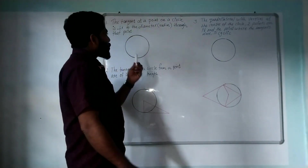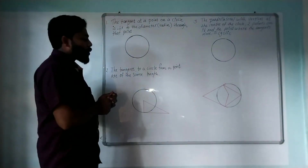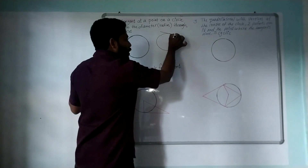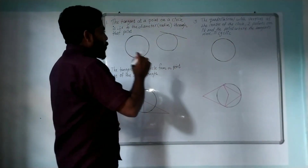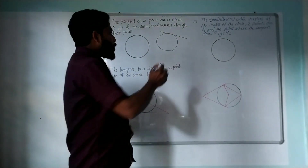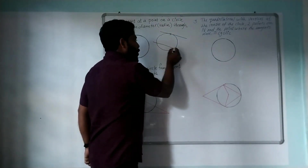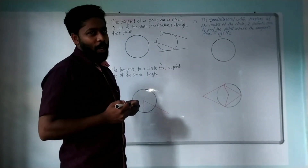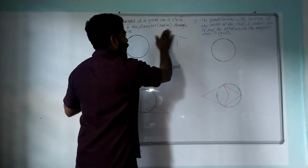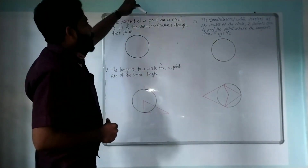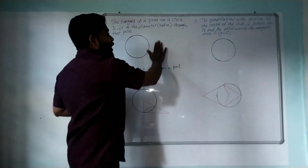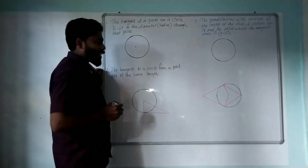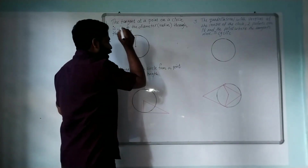How are you doing? Every point on a circle — the tangent at any point on a circle is perpendicular to the diameter and radius through that point. Look at that. This is the center. Now we have the radius.